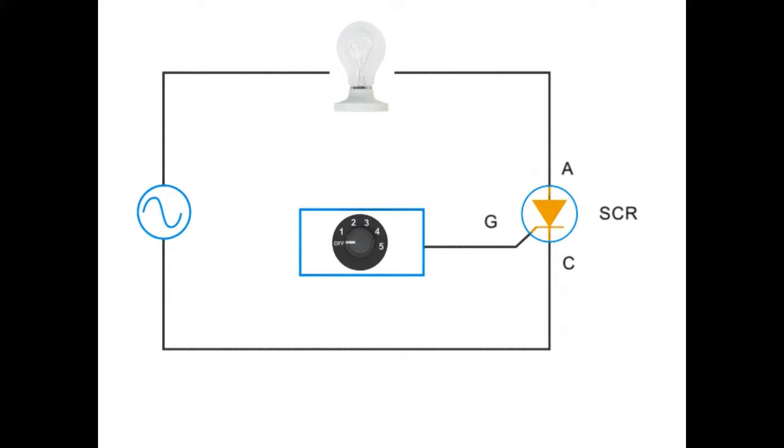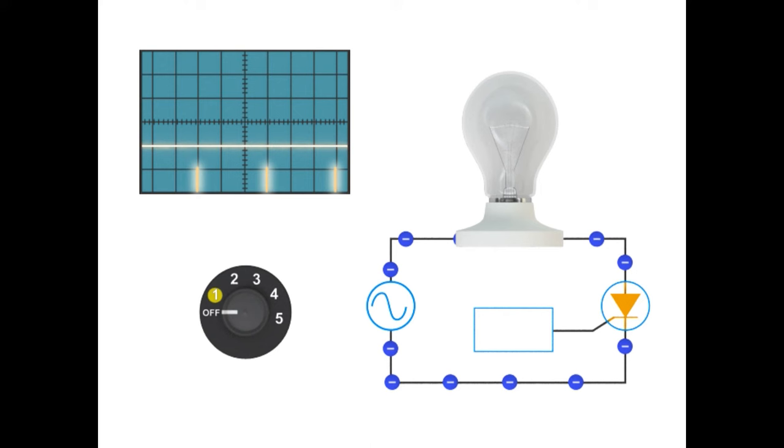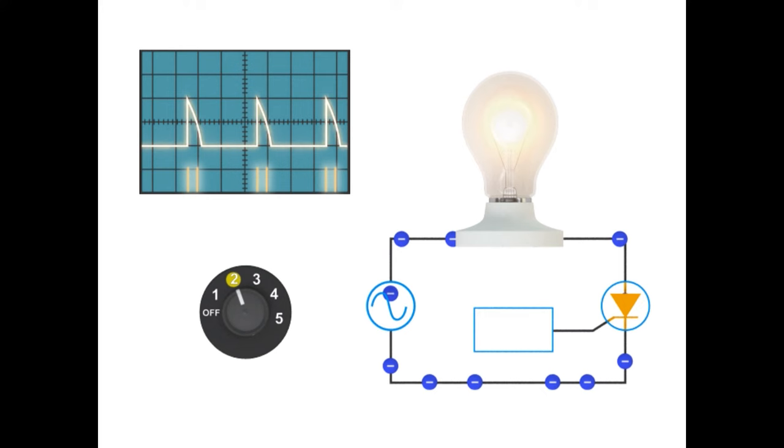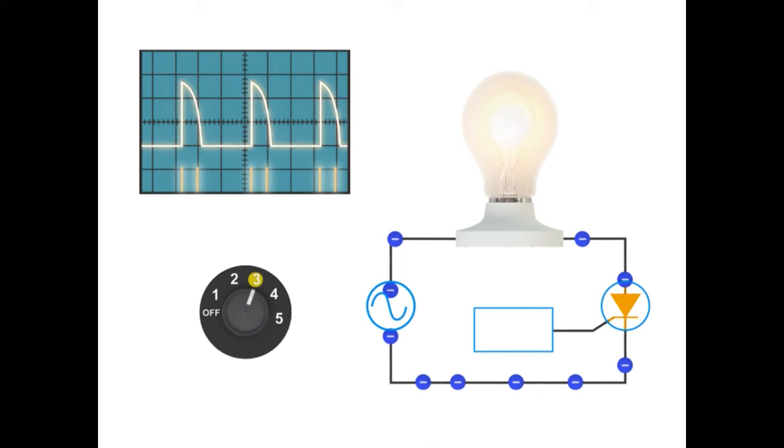As the switch at the gate controller is adjusted to control power in the AC circuit, note the timing of the gate pulse and the subsequent change in the waveforms. Also, observe that average current flow increases and the lightbulb becomes brighter.